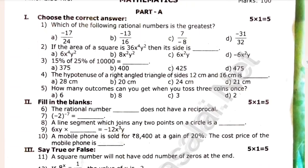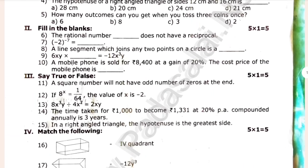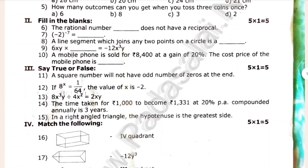If you want to subscribe to Gautam Media, please click the bell button and subscribe to the channel. If the area of the square is 36x⁴y², then its side is blank.